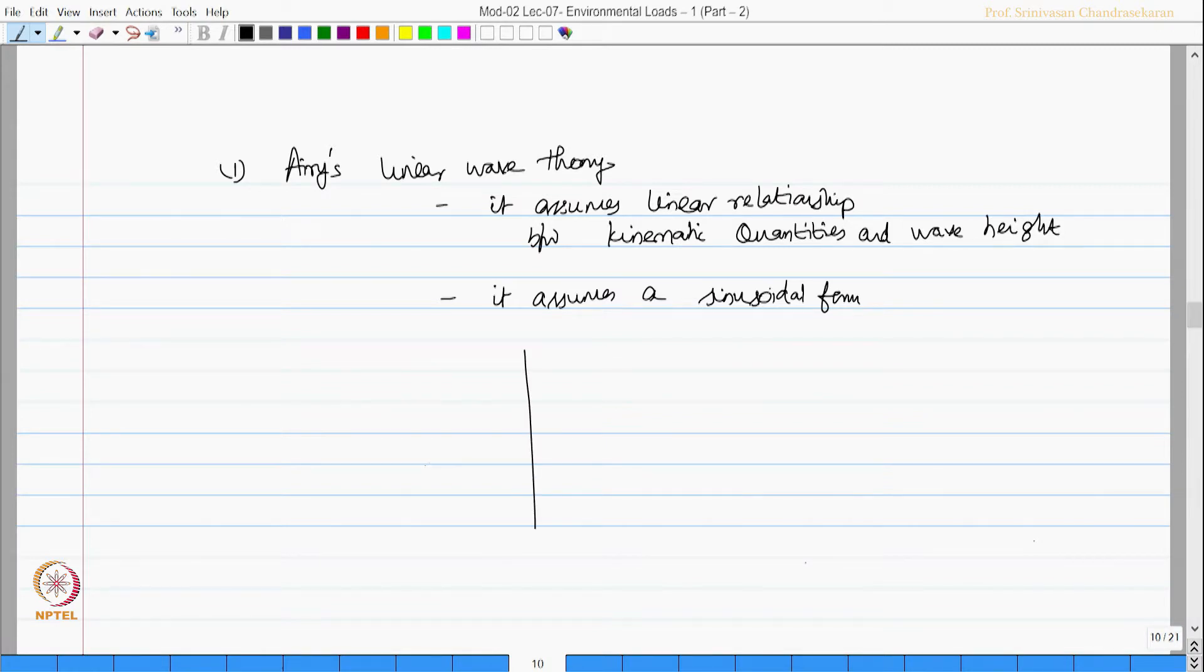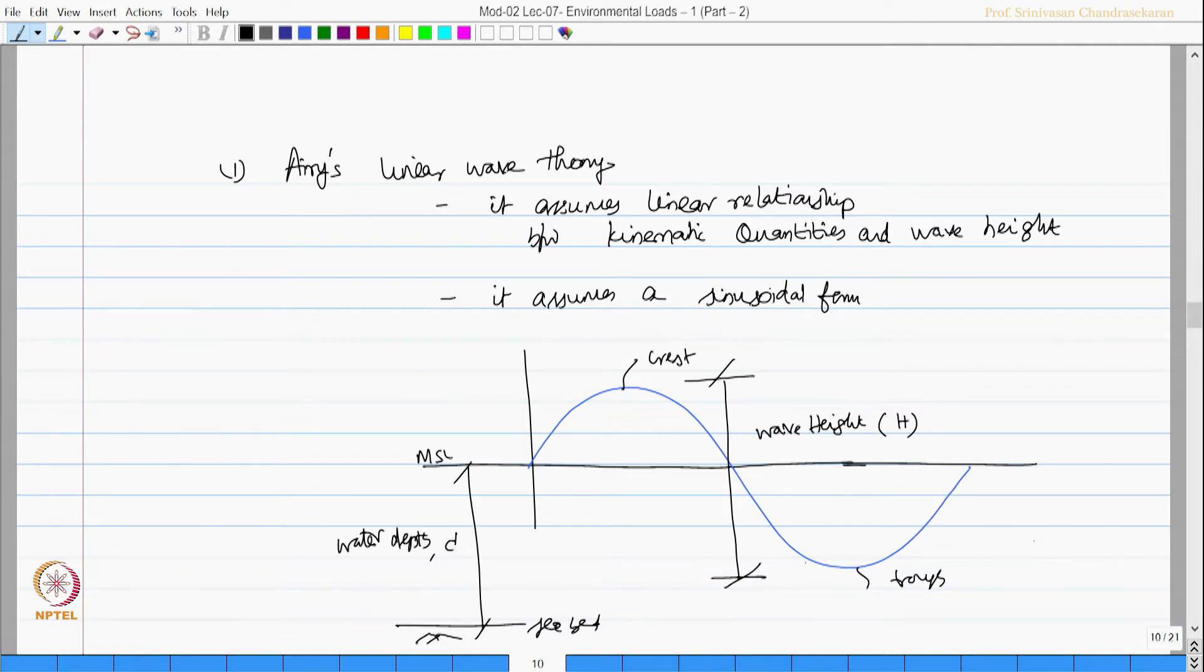If you draw a specific wave, the difference between the crest and the trough is called wave height. The average of this is called mean sea level and if this is my seabed, this is called my water depth indicated as small d. And from one zero to next zero is called a wave period and so on.